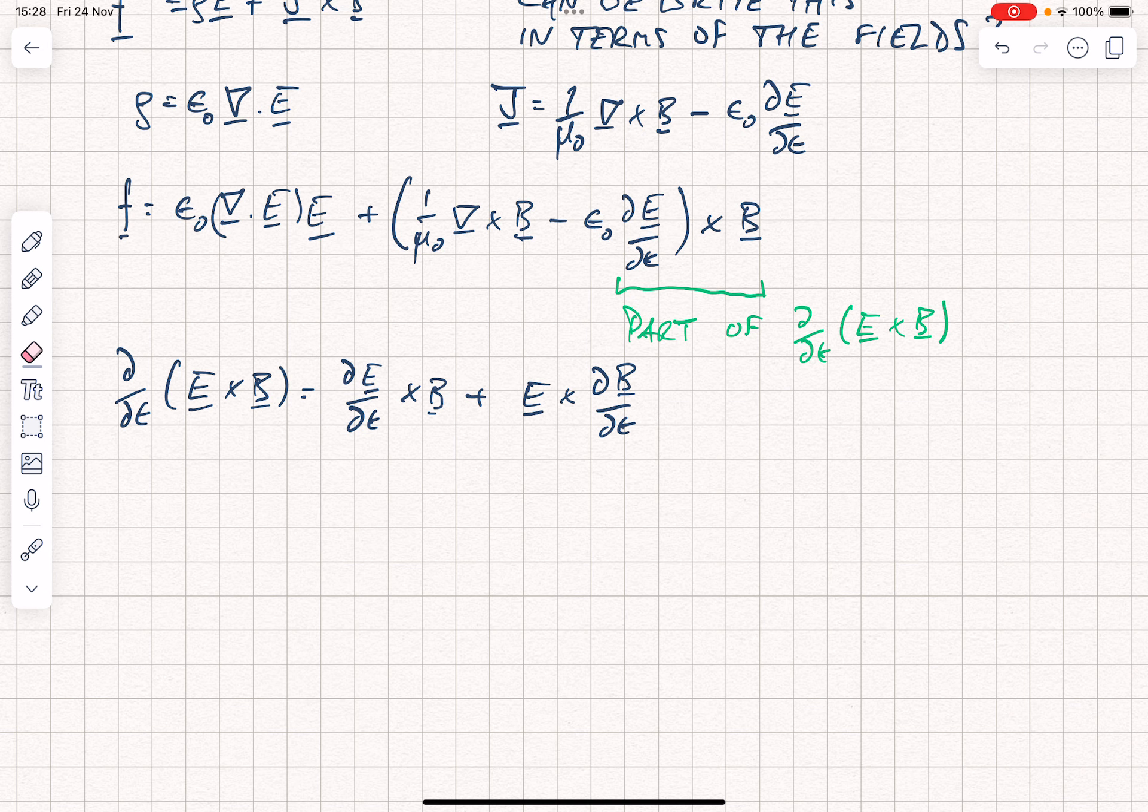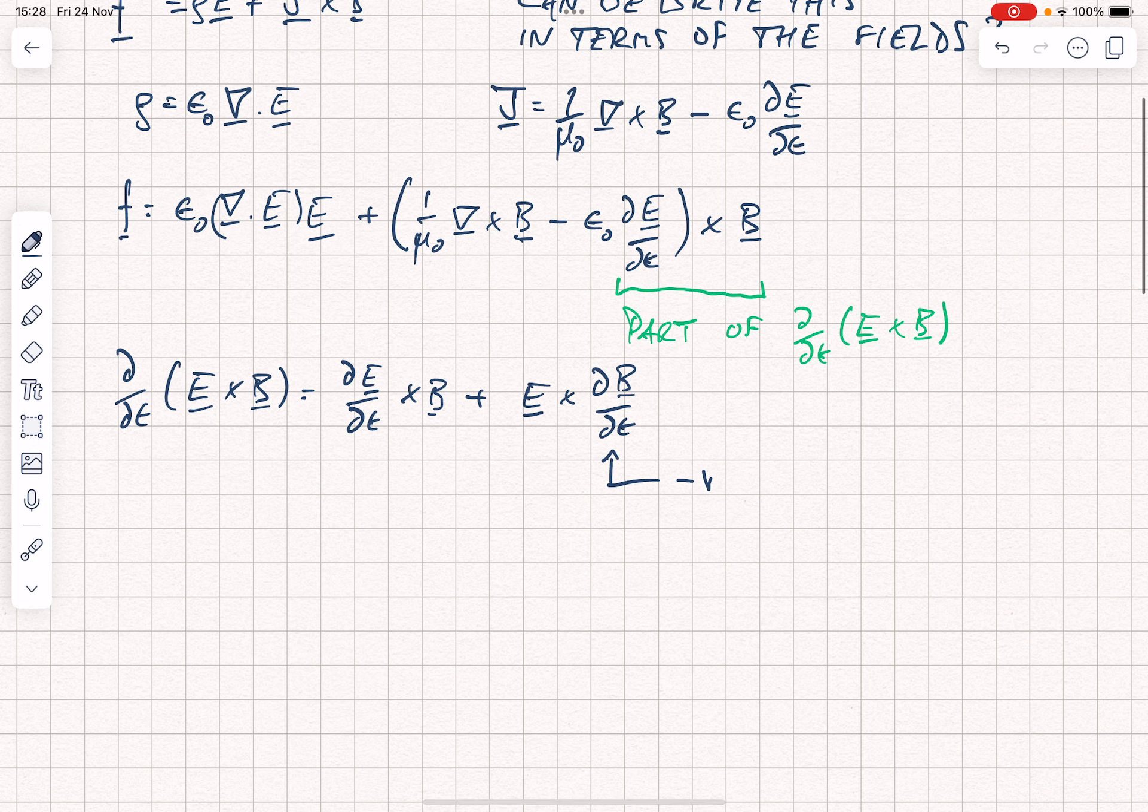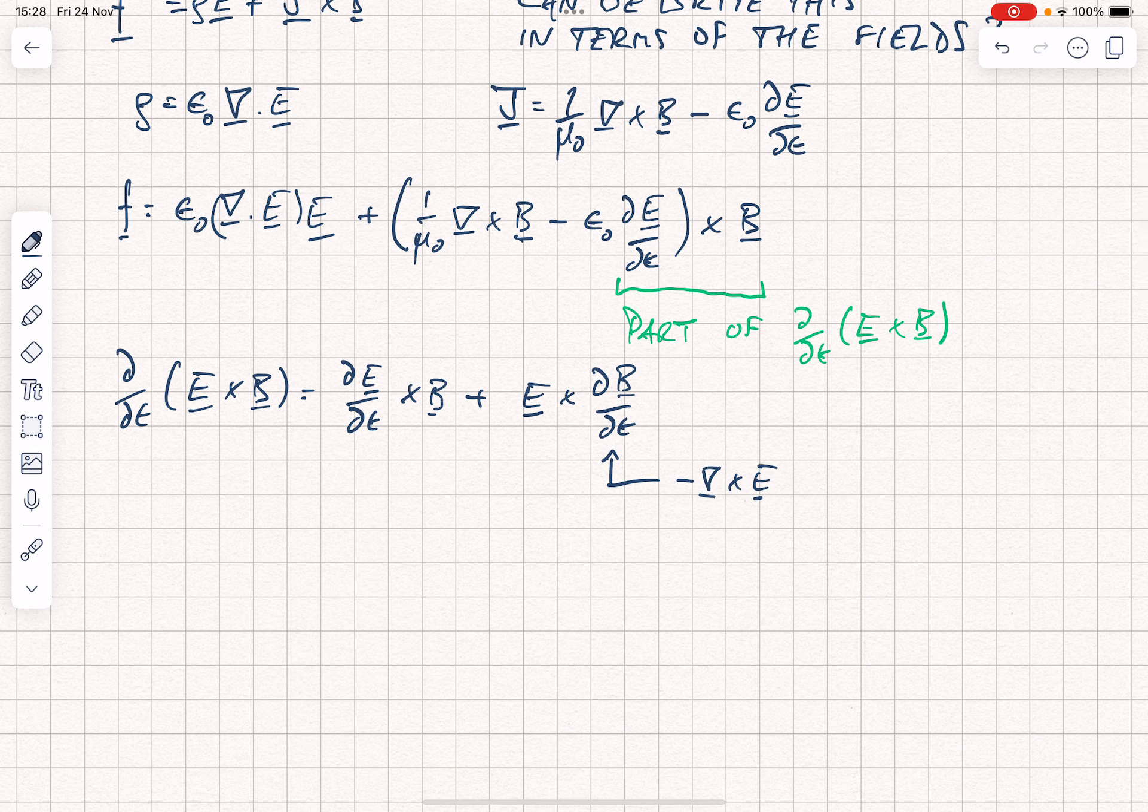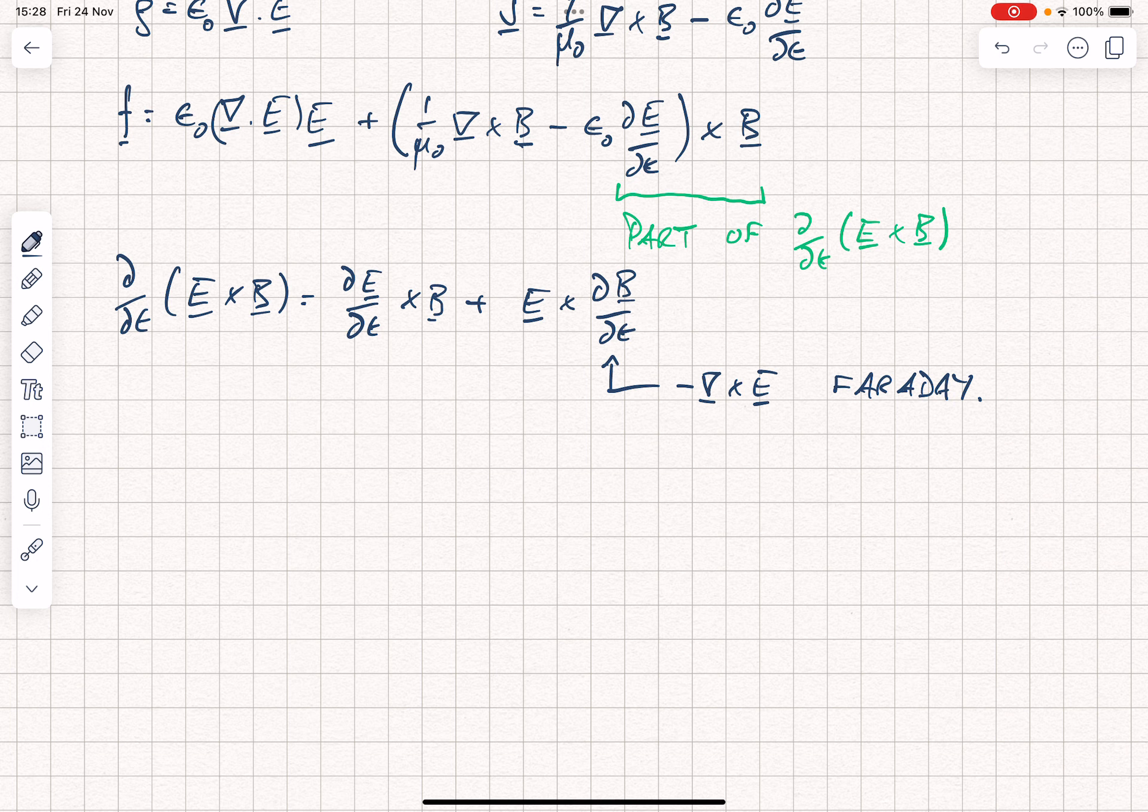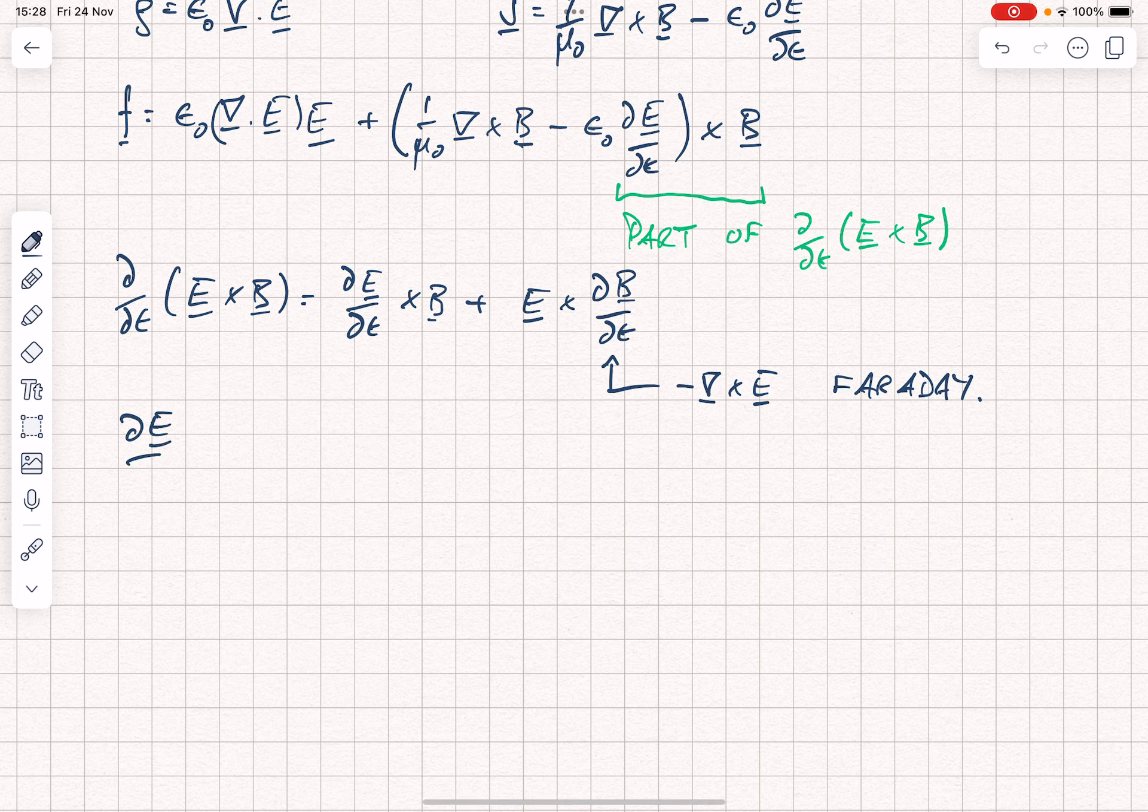Now, we want to get rid of the dB by dt just for the moment, so we're going to replace this using Faraday's law with a minus curl of E. That's using Faraday's law. So now we have that dE by dt crossed with B can be written as d by dt of E cross B, so we have the time derivative of something very close to the pointing vector plus E crossed with curl E.